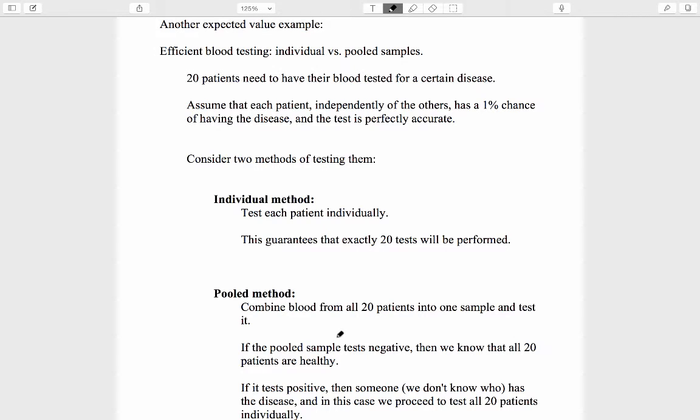If the pooled sample of blood tests negative, that means that there's no evidence of the disease anywhere in this sample that contains blood from all 20 people, so all 20 people are okay. All 20 patients are healthy in the sense of not having that particular disease.